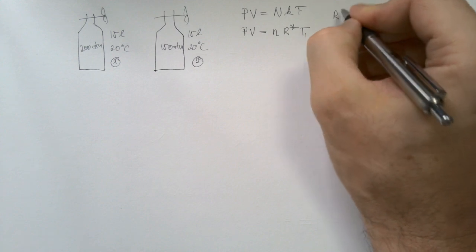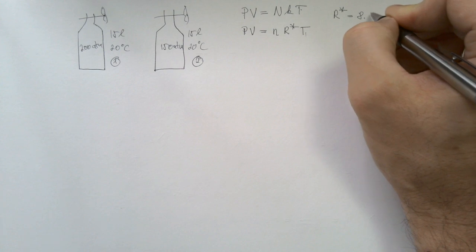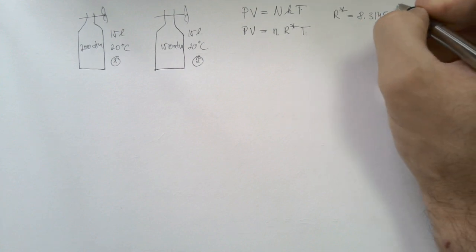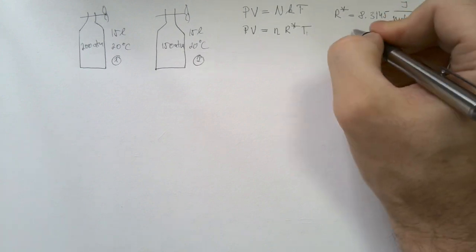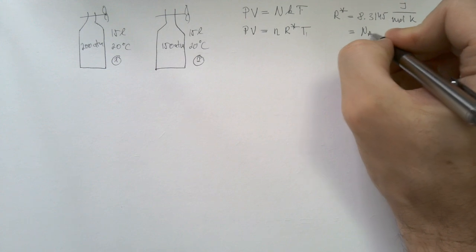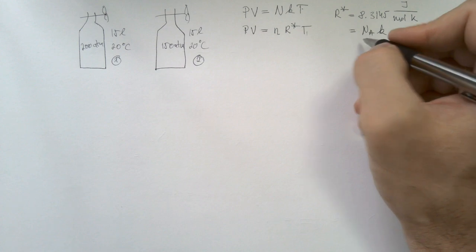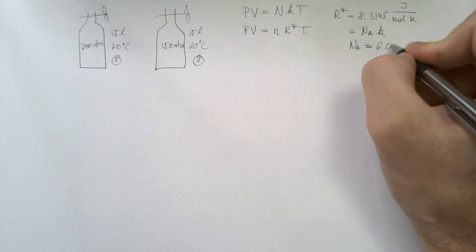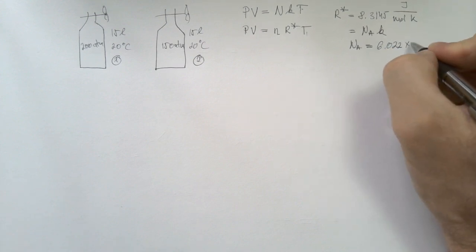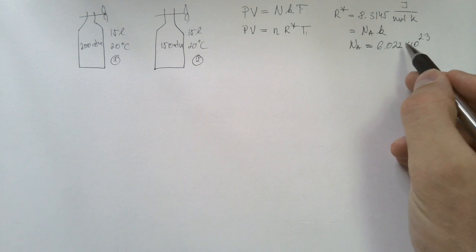For example, you will recall that this universal gas constant, that is equal 8.3145 joule per mol per kelvin is simply equal NA times K, where K is Boltzmann constant, and NA, what is NA? Well, that's Avogadro's number 6.022 and so on times 10 to power 23 of anything. And that's number of something in one mole.